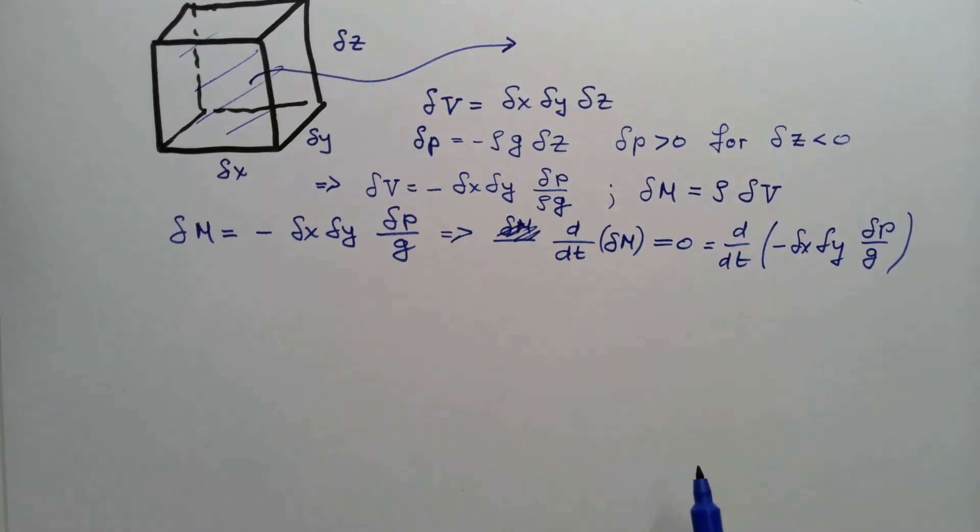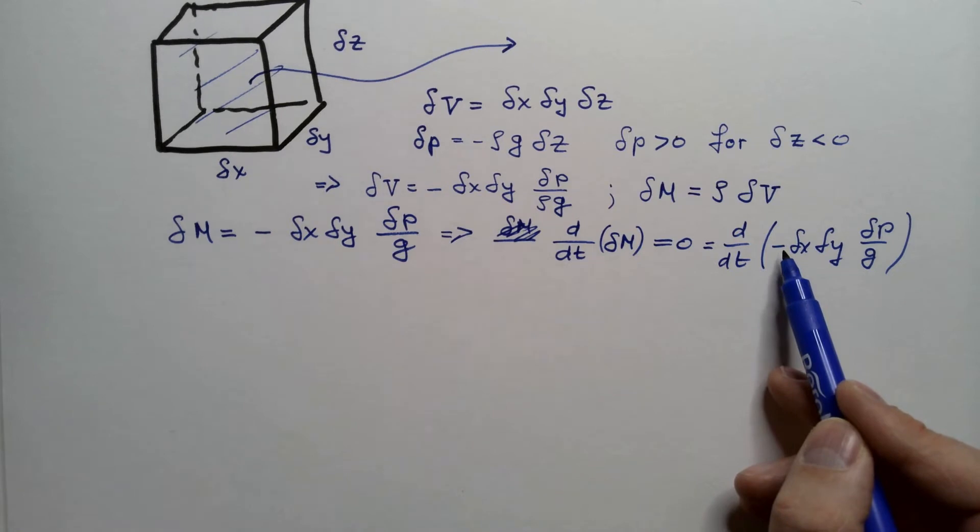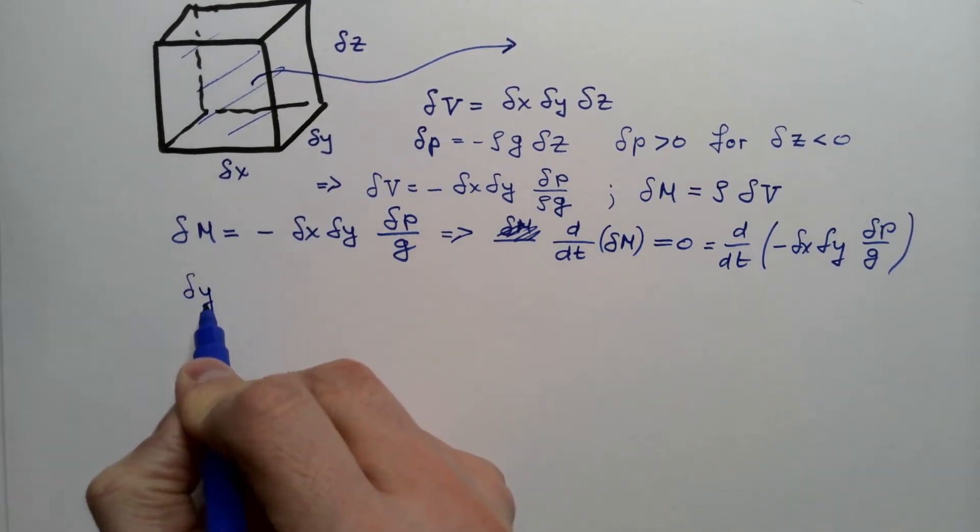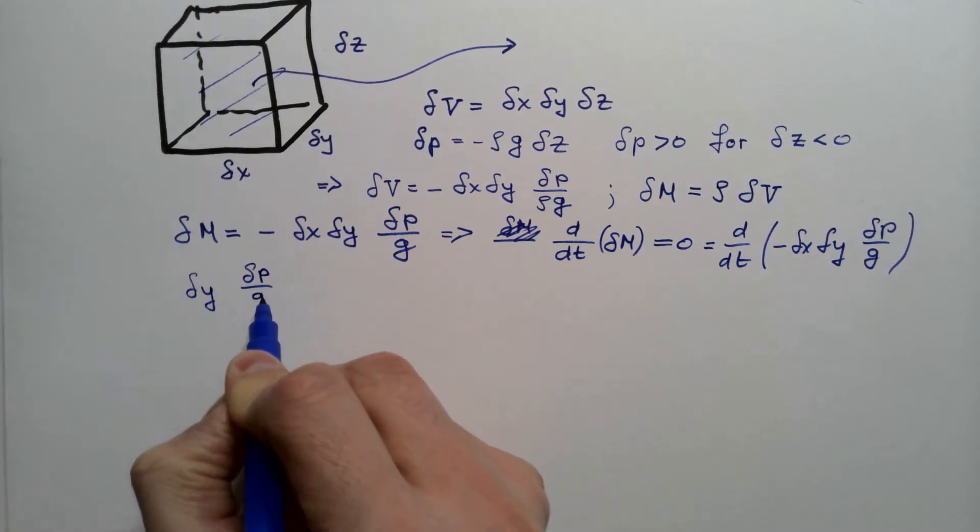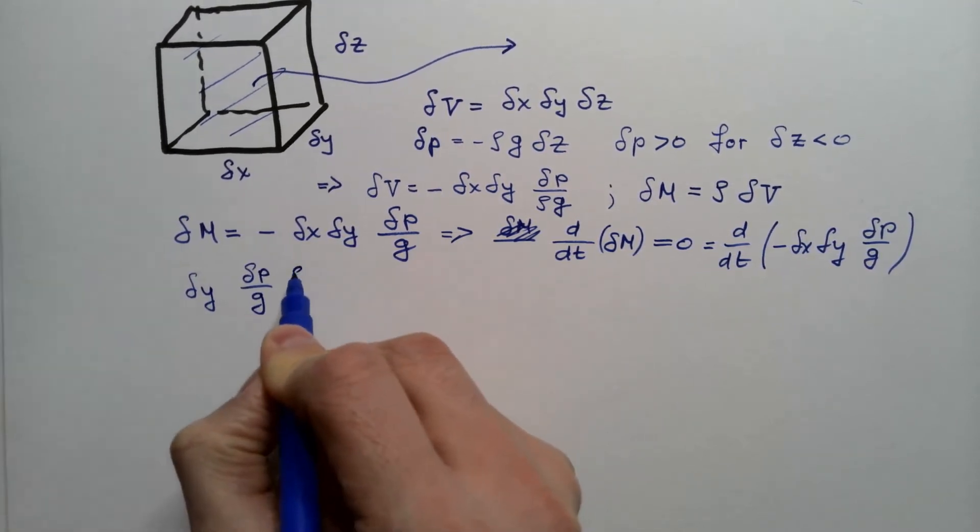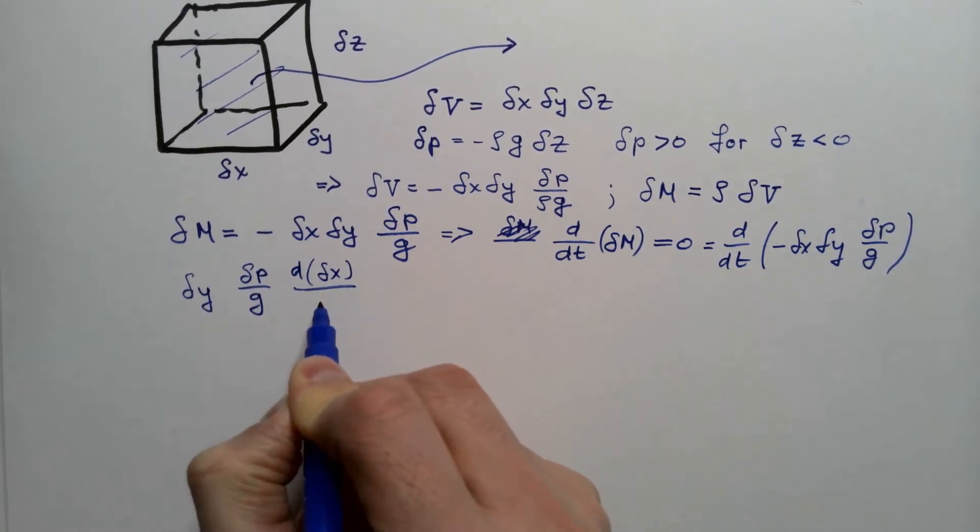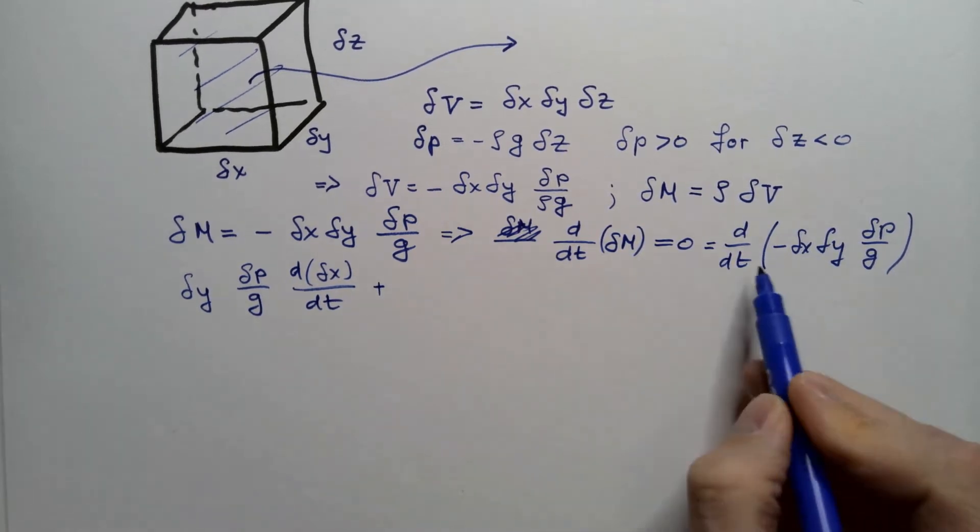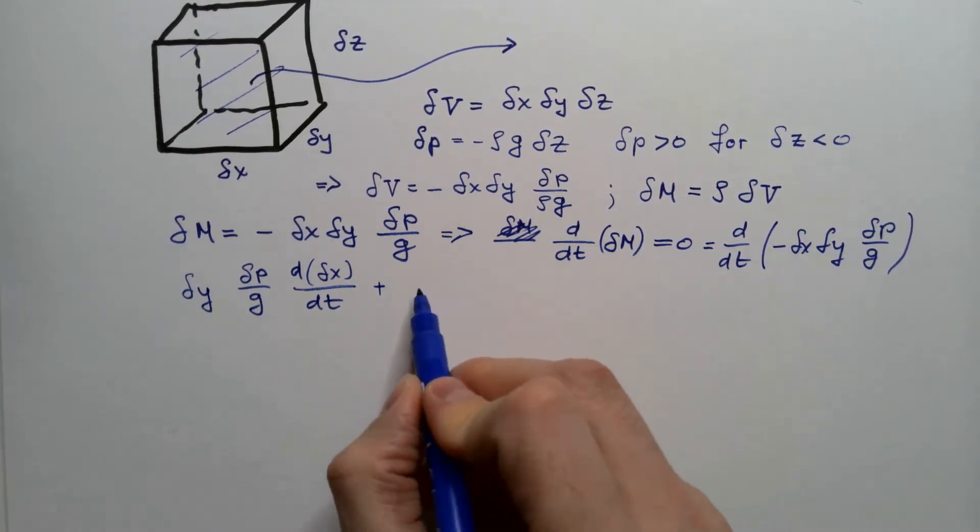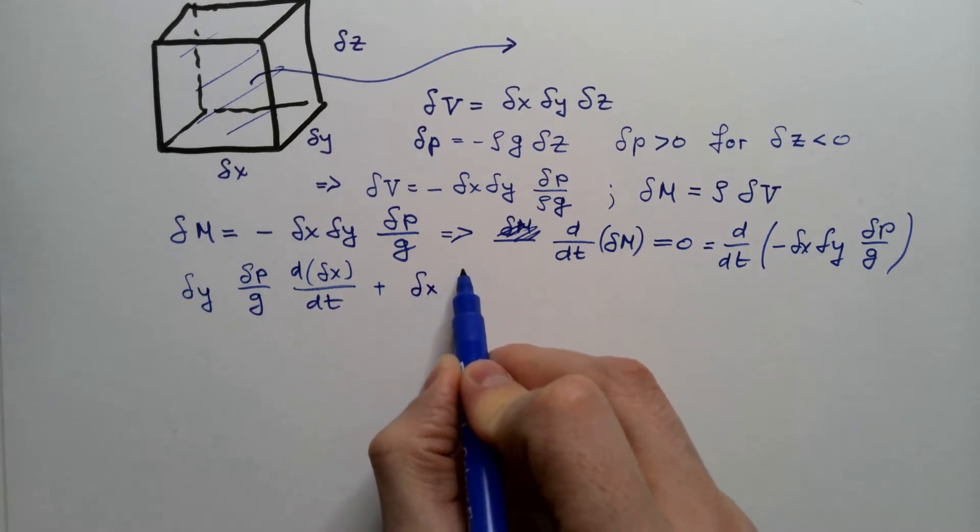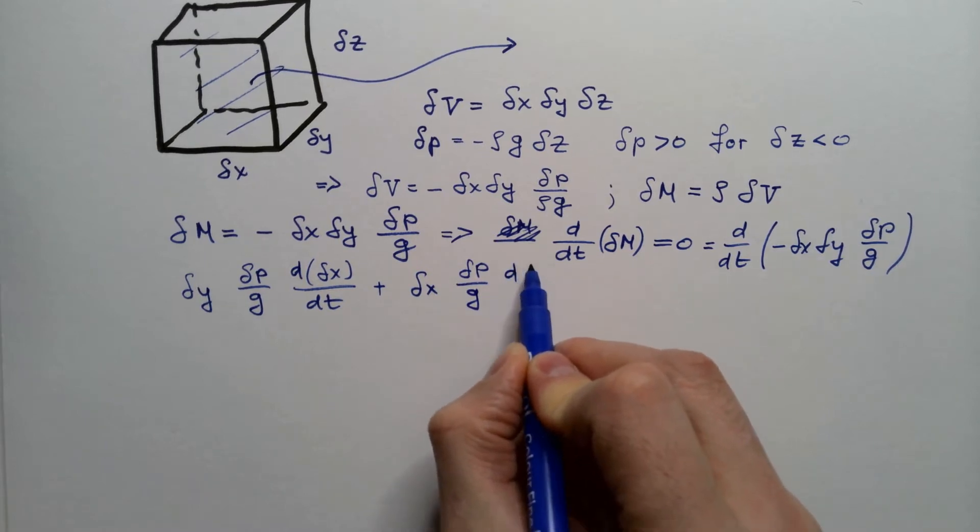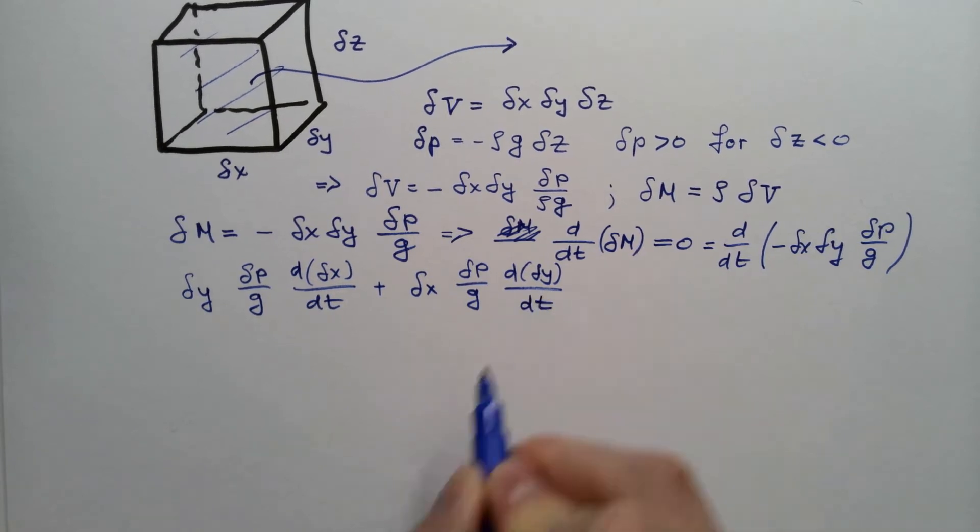Now I can multiply this by negative one and carry out this differentiation to get delta y delta p over g, d of delta x over dt, plus delta x delta p over g, d of delta y over dt.